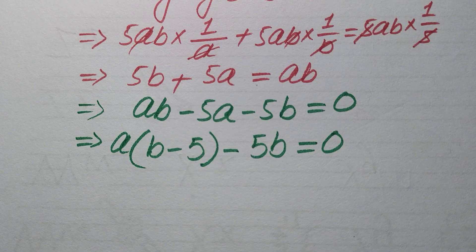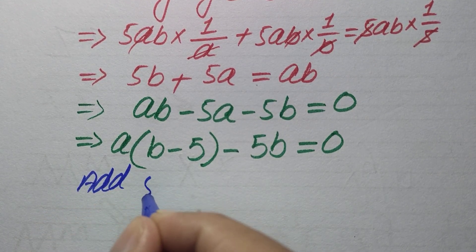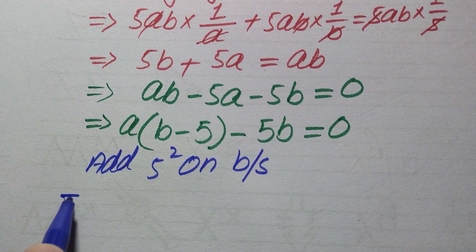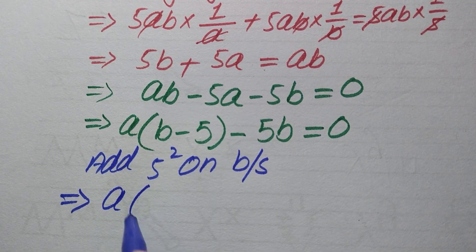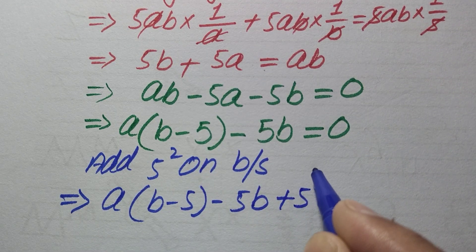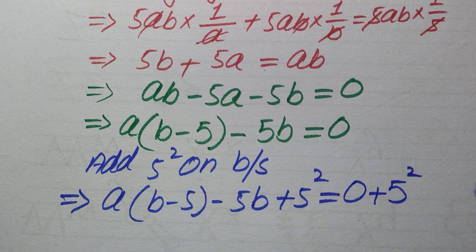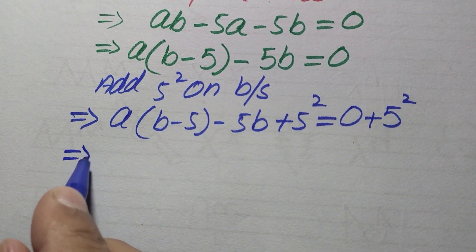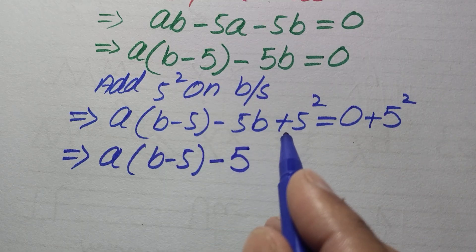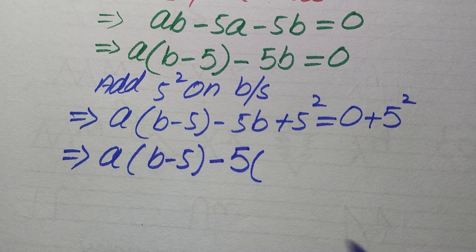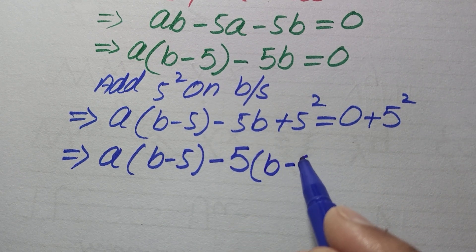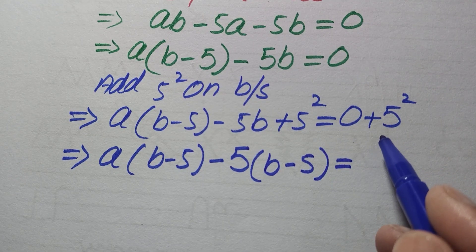To factor this equation completely, we add 5² to both sides. This gives a(b−5) − 5b + 5² = 5². We can then take out −5 as a common factor from the last two terms, giving a(b−5) − 5(b−5) = 5². Now both terms share the factor (b−5).